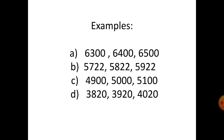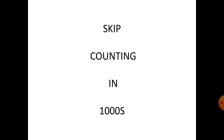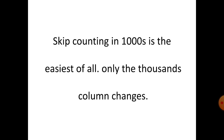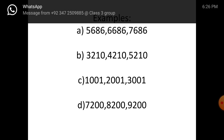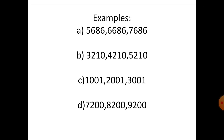Counting in thousands is the easiest of all — only the thousands column changes. Example A: five thousand six hundred and eighty-six, six thousand six hundred and eighty-six, seven thousand six hundred and eighty-six.